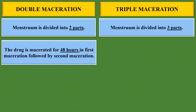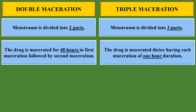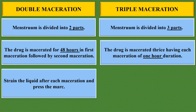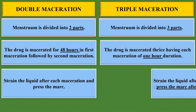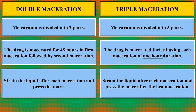In double maceration, the drug is macerated for 48 hours in the first maceration, followed by a second maceration for 24 hours. In triple maceration, the drug is macerated thrice, with each maceration of one hour duration. In double maceration, strain the liquid after each maceration and press the marc. In triple maceration, press the marc after the last maceration.